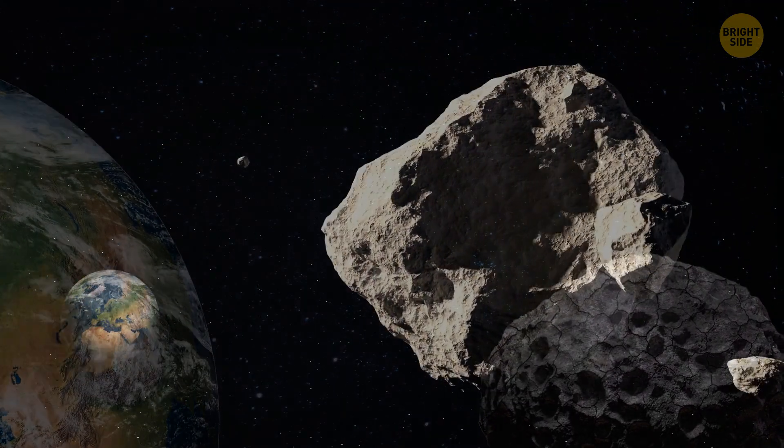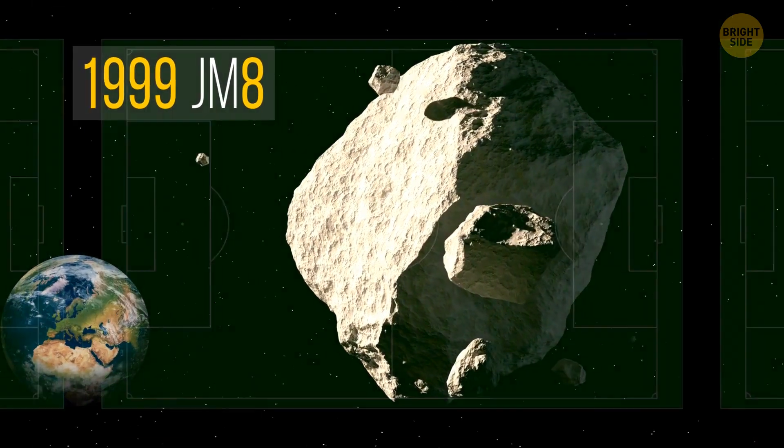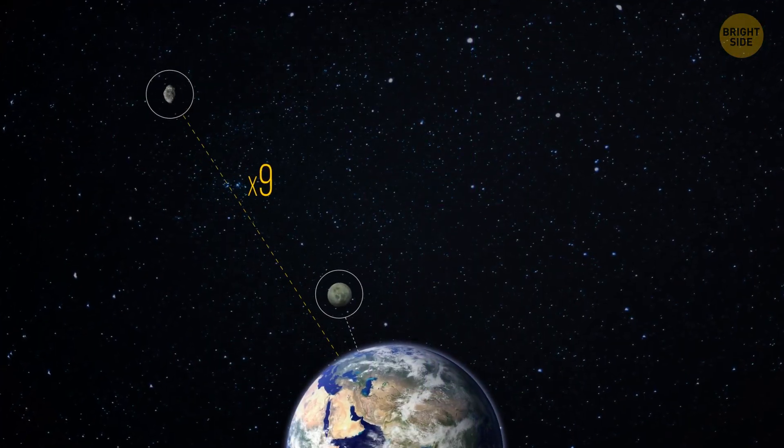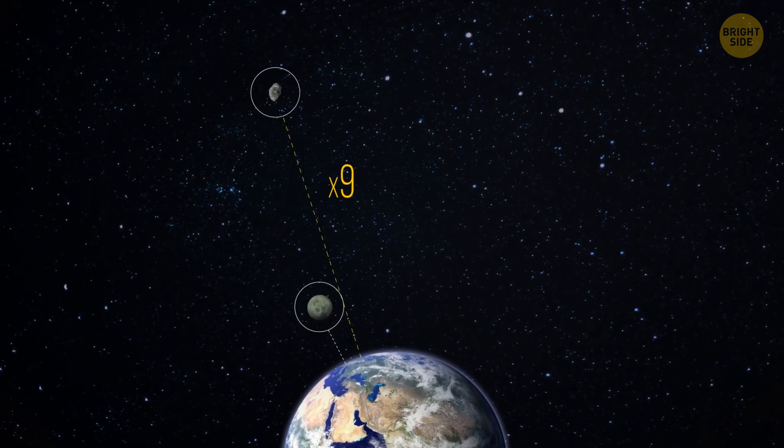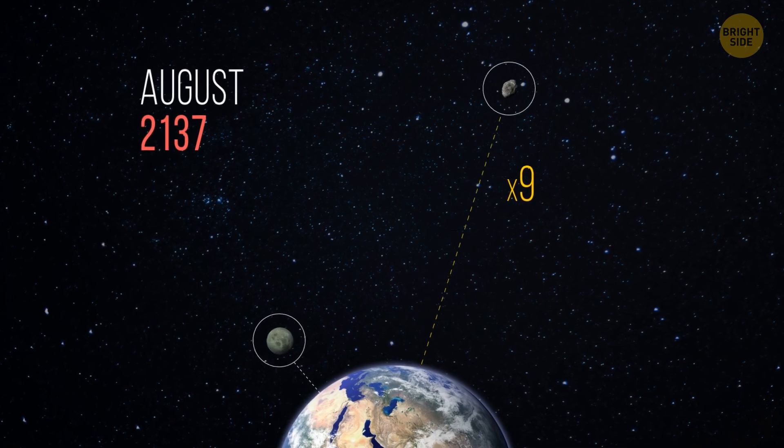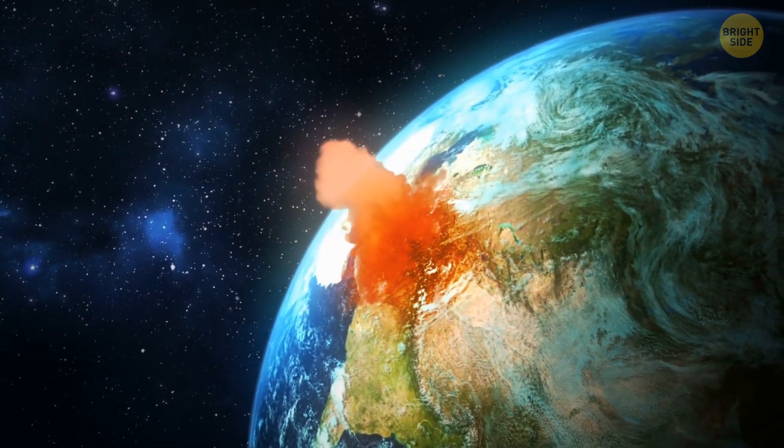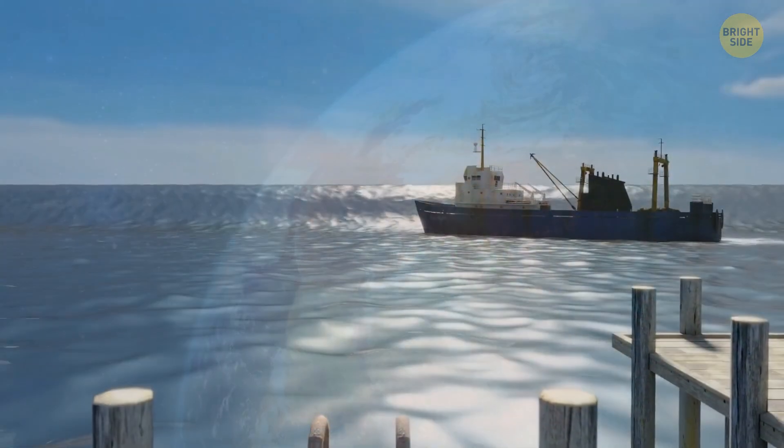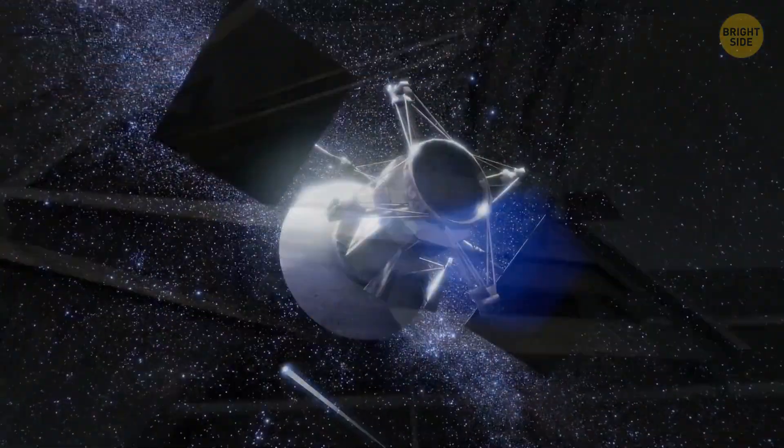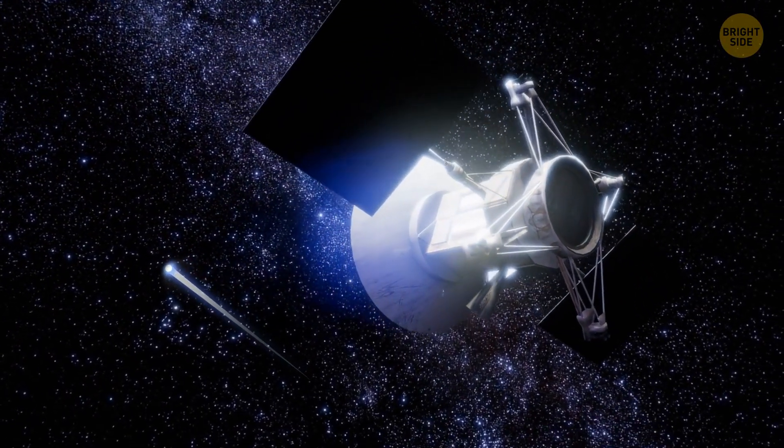But the largest potentially hazardous asteroid is the 1999 JM8. It's about the size of 77 soccer fields. It passes by Earth at 9 lunar distances. Its closest approach to our planet will happen in August 2137. If such a meteorite were to hit Earth, an entire continent could be wiped out. The rest of the world would experience massive tsunamis, but would survive the event. So naturally, scientists are thinking of ways to protect the planet from such a disaster.